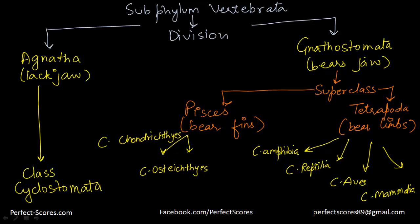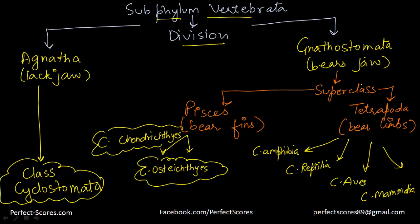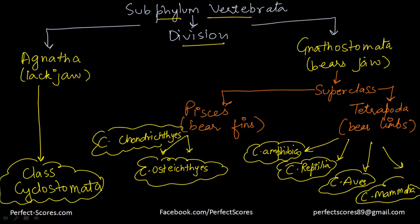Let's go through this division once again. Subphylum Vertebrata is divided into Agnatha — without a jaw — giving class Cyclostomata, and Gnathostomata — bearing a jaw — divided into two superclasses: Pisces with fins, comprising class Chondrichthyes and class Osteichthyes; and Tetrapoda with limbs, comprising class Amphibia, class Reptilia, class Aves, and class Mammalia. We are going to discuss each of these seven classes one by one.